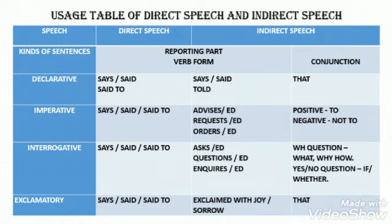For an interrogative sentence, the reporting part verb forms in direct speech are 'says,' 'said,' 'said to.' In indirect speech, we use 'ask,' 'questions,' 'enquires,' or in past tense: 'asked,' 'questioned,' 'enquired.' The conjunction depends on the question type: for a WH-question (what, why, how), use the question word itself; for a yes/no question, use 'if' or 'whether.'